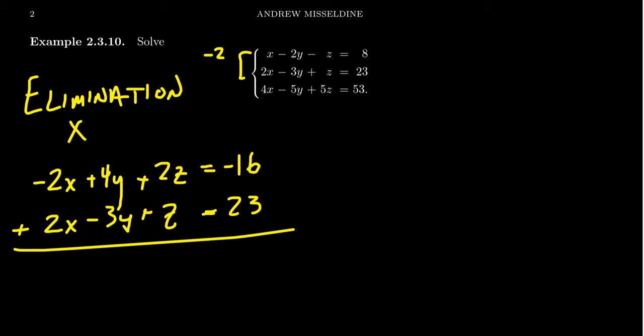So because of our choice of coefficients the two x's are going to cancel out. The y's we get four y minus three y which is a y. Two z plus z is a three z and then negative 16 plus 23 is a seven.